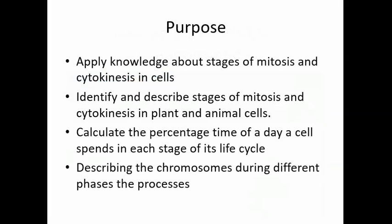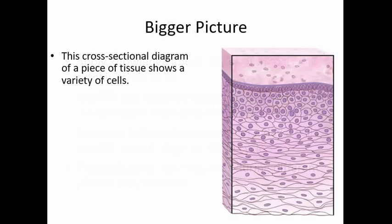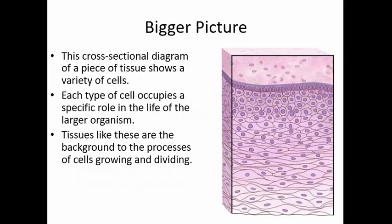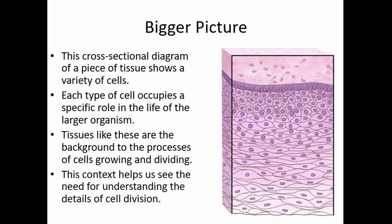You'll describe the chromosomes and what they're doing during different phases of the processes. Let's take a moment and think about the bigger picture. This cross-sectional diagram of a piece of tissue shows a variety of cells that have a variety of functions. Each type of cell has a specific role in the life of the larger organism. Tissues like these are the background to the processes of cells growing and dividing, helping us understand the need for cell division before we can understand larger details of a living organism.